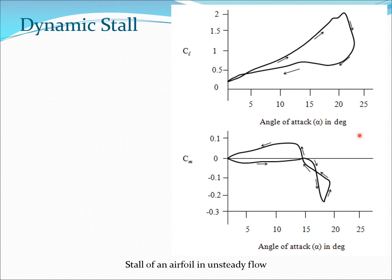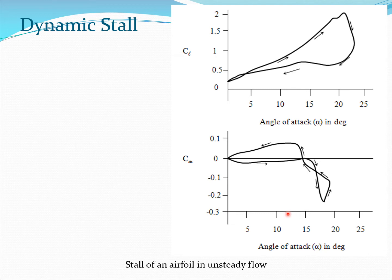Looking at CM, the pitching moment coefficient goes along a curve and then there is a huge excursion — a very large load is generated which impacts the pitch link and the control system. It then goes back, reaches a positive value, and returns, forming a hysteresis loop. Very large torsional moments are generated at angles associated with stall, and again these angles are greater than in the static case — around 17 to 20 degrees rather than the static 12 degrees. These are the stall situations which typically occur in unsteady flow and represent dynamic stall.